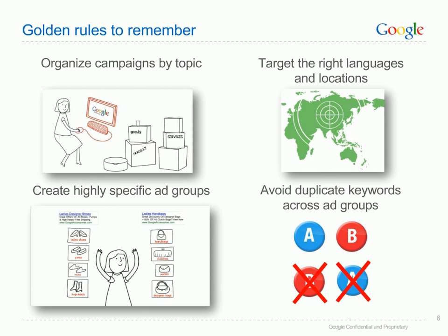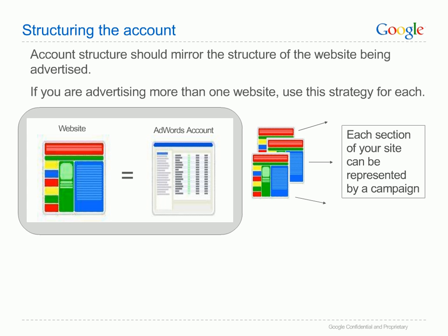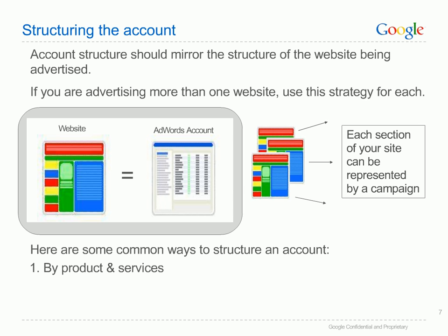Avoid duplicate keywords across ad groups. Ensure that your keyword list is mutually exclusive across your ad groups as this will allow you to control which ad text is triggered by each of your keywords. A good rule of thumb for creating an effective campaign structure is to mirror the website structure. Within this context there are a number of ways to arrange campaigns and the ad groups within them. By products and services: if you create campaigns and ad groups around specific themes or products, you can create tightly knit keywords and ad texts that relate directly to a particular product or service and that link directly to that product's web page.